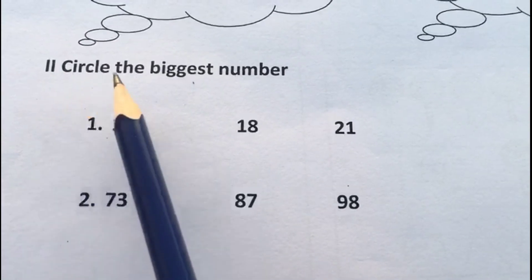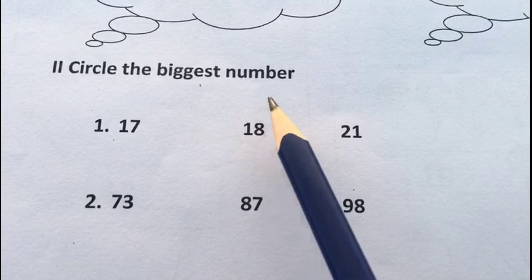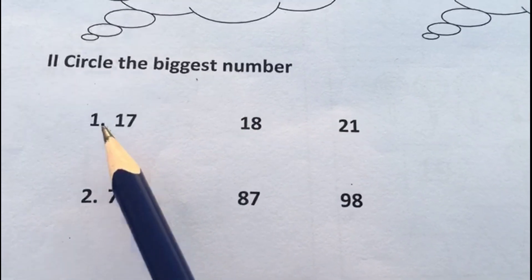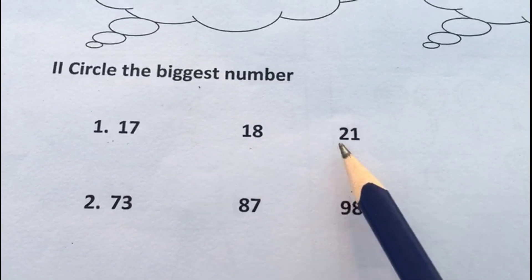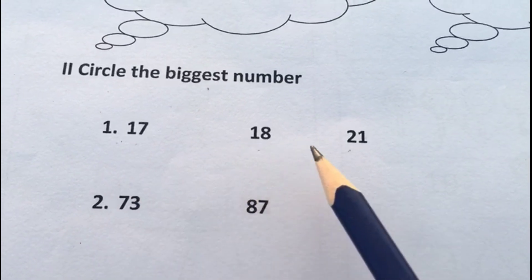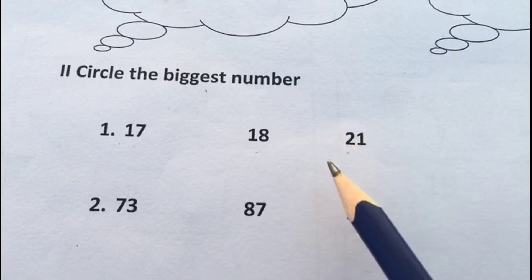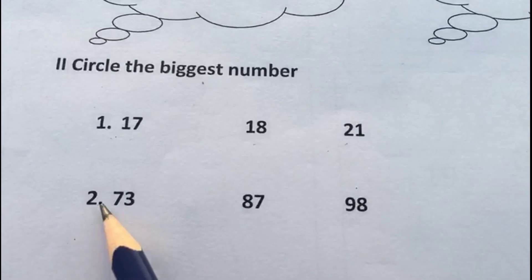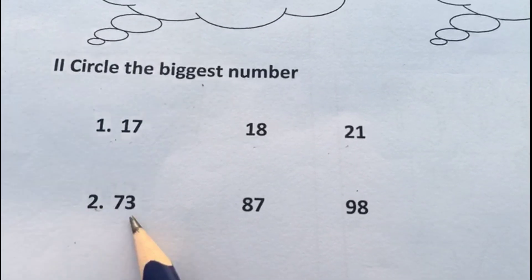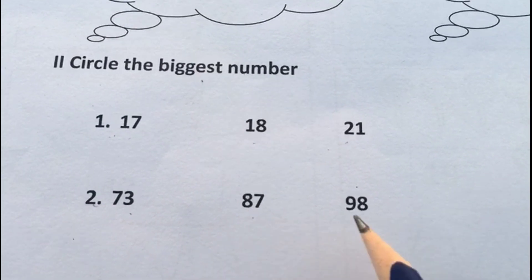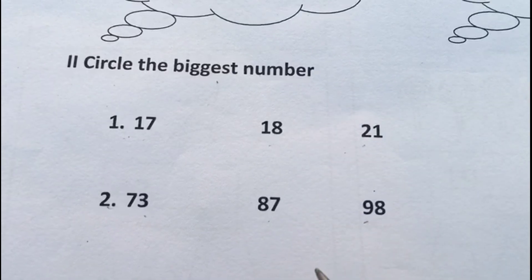The second question is circle the biggest number. Here we have question number one: 17, 18, 21. Ask your child to find out the biggest number and circle it. The second question: 73, 87, and 98. Again, ask them to find out the biggest number and circle that particular number.